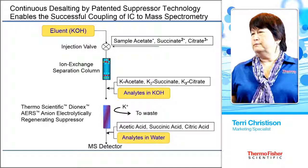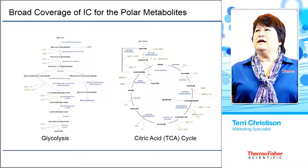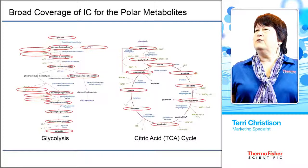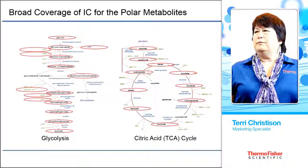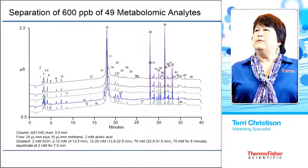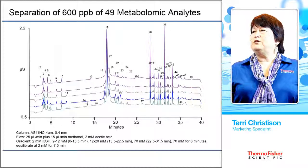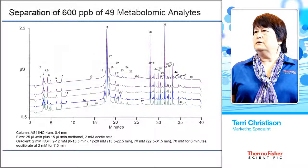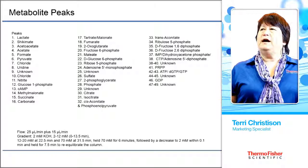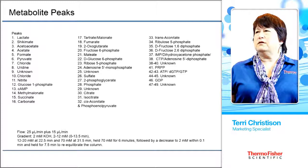IC has broad coverage for polar metabolites — unlike other separation methods. Here we've circled the analytes that ion chromatography can identify and separate. Here we're showing our first chromatogram — an ion chromatography chromatogram — showing 49 peaks that we have identified using our separation method. The metabolite peaks range from some inorganic compounds that we normally see, as well as organic acids of importance in the glycolysis and TCA cycle, as well as some nucleotides.